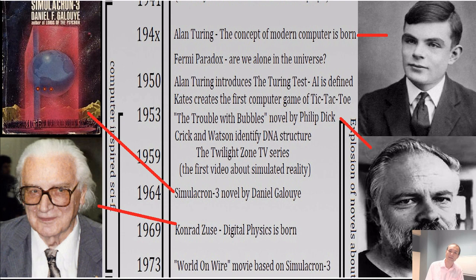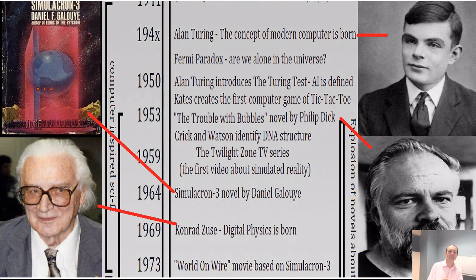In the 1950s, Alan Turing — genius — comes up with the definition of the Turing test, which is a definition of artificial intelligence, and it is still used today to define AI. Also in the 1950s, someone creates the first computer game — very primitive, tic-tac-toe — but it is a computer game. There were some attempts before that, but this would be the first proper computer game.